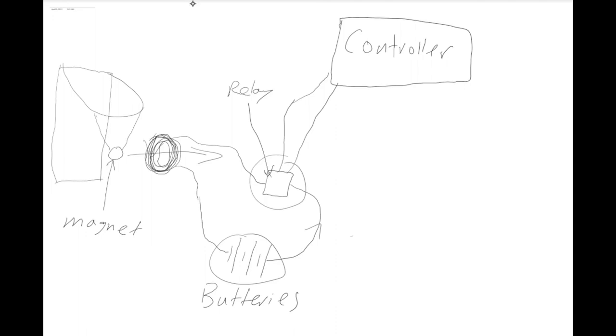Now the controller controls whether the relay is open or closed, and the input is a square wave. On the high peaks, it closes the relay and allows the current to flow.